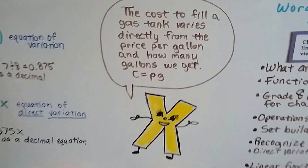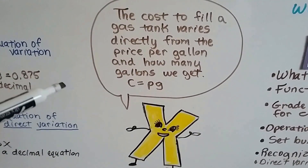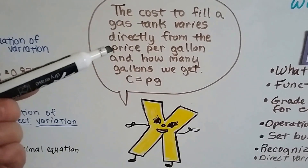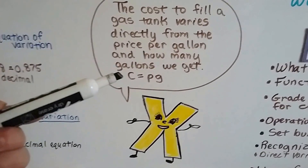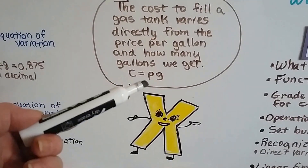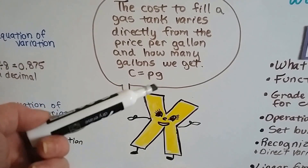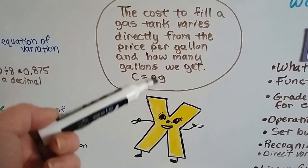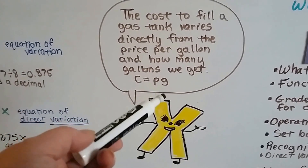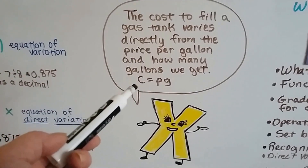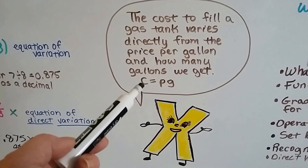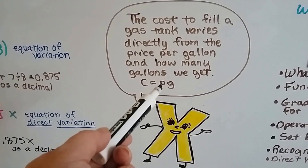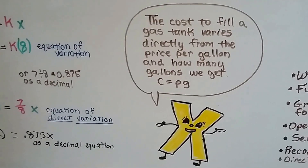The cost to fill a gas tank varies directly from the price per gallon and how many gallons you get. You get one gallon at $3 per gallon, you pay $3. Two gallons at $3 per gallon, you pay $6. The price per gallon stays constant — that's the k. The total cost depends on how many gallons you get.